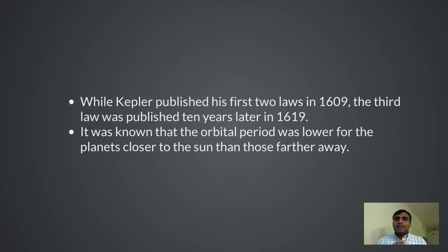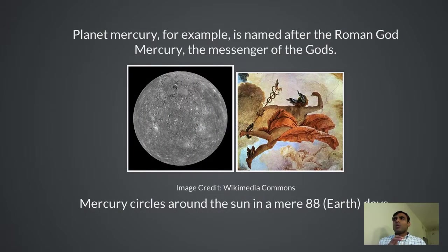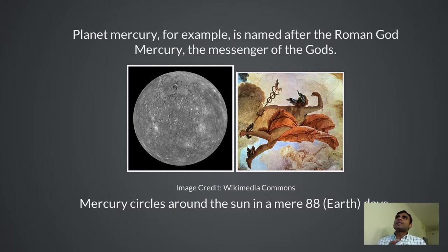Kepler's third law. While the first two laws were published in 1609, the third law was published 10 years later. It was known that planets closer to the sun complete their orbit faster than planets farther away. Mercury, for example, makes its orbit around the sun in just 88 days — and that's why it's named after the Roman god Mercury, the messenger of the gods, because it travels so swiftly.